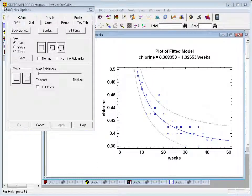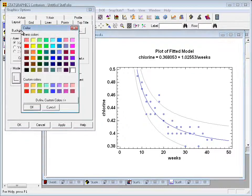The first tab on the graphics options dialog box is labeled layout. This lets me change things like the style of the axes, the background colors, the border color, and so forth. I'm going to press the button labeled background,